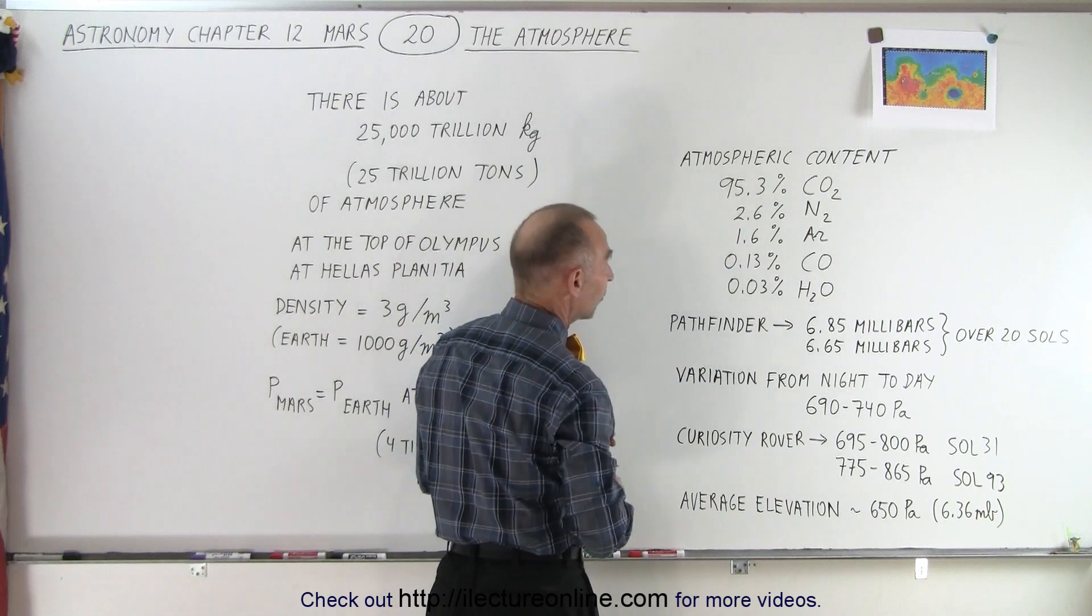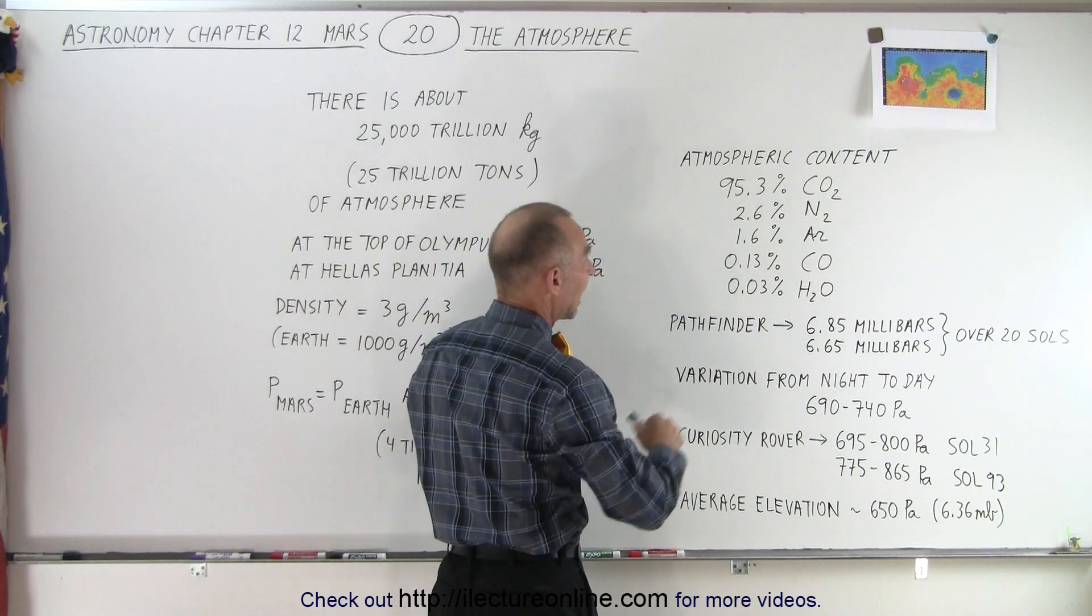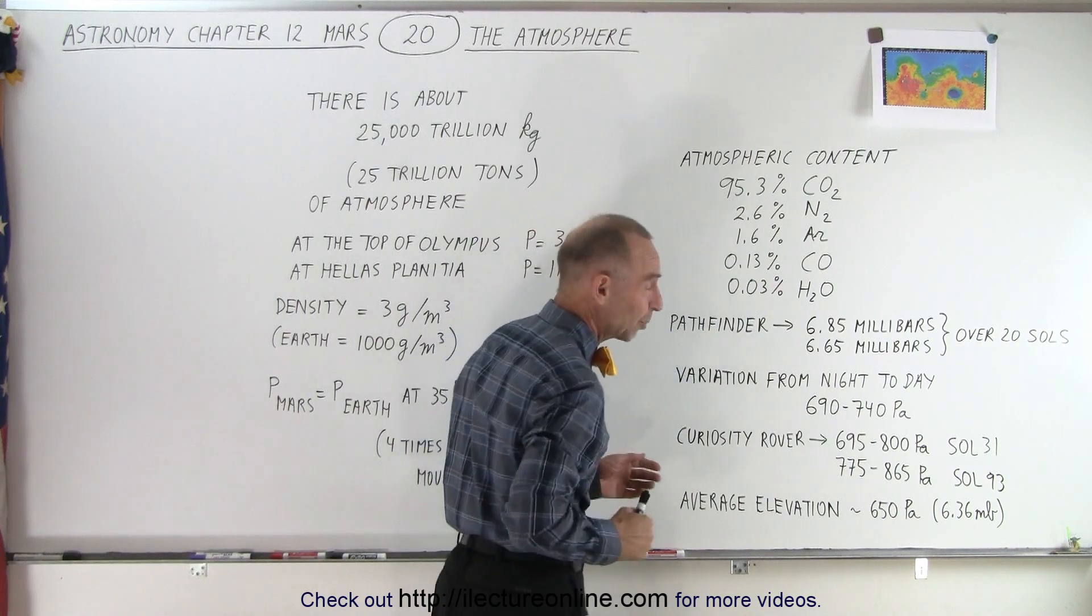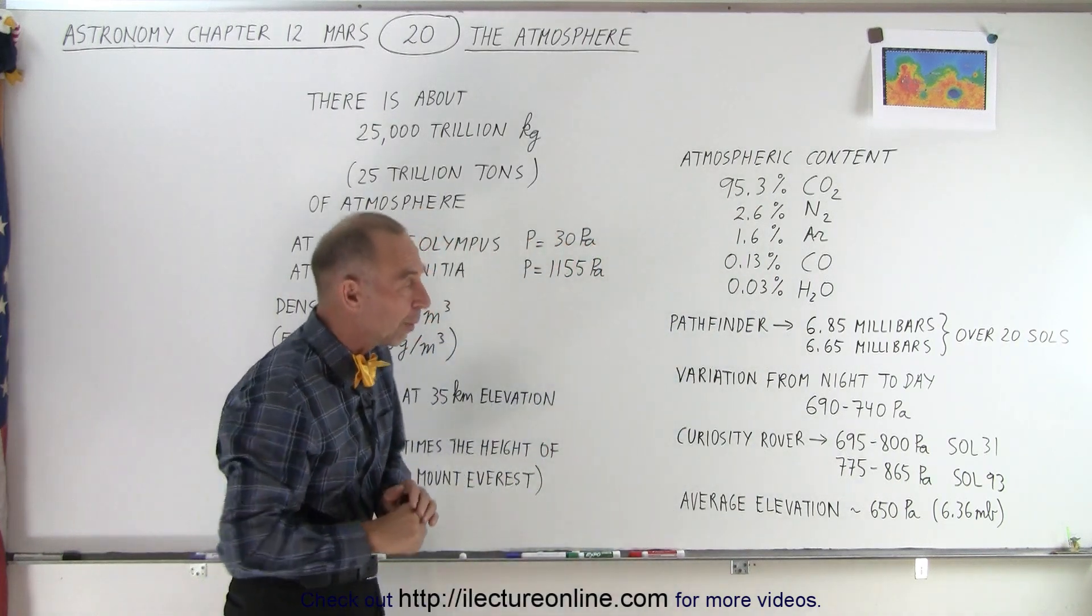95.3% of the atmosphere is carbon dioxide, and then the next most common component, nitrogen, is 2.6%. Very similar to what we see on Venus.